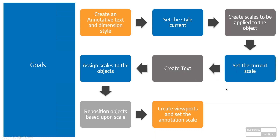We'll set up our scales and then set a current scale — we'll start with 1 to 1000, which is basically 1 to 1 for our text and object scaling. It's easiest to start with 1 to 1000, and you'll see as we go along how this all works. Once we've got our scale set, we can create text objects or any annotative object. We'll also be looking at layouts and creating viewports to see how the display changes when we change viewport scale.